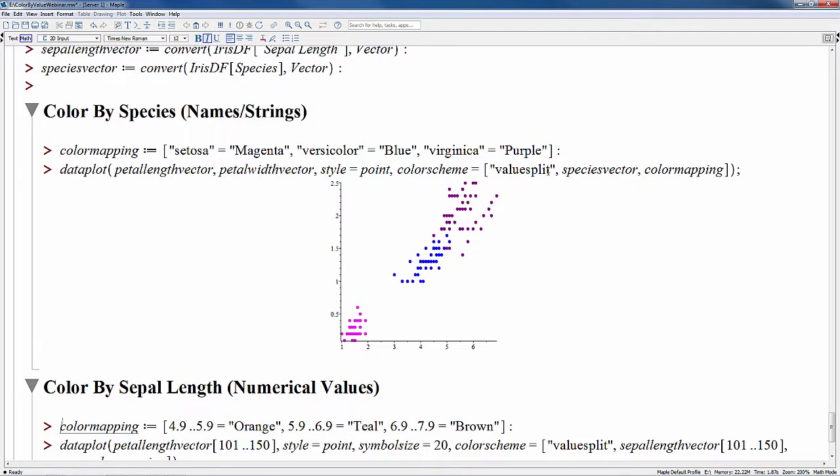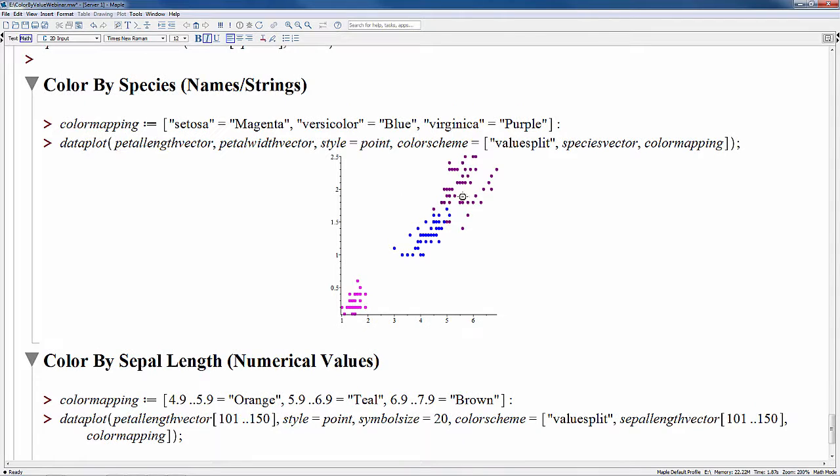And one thing that's important is the length of the vector that we are coloring by must be the same length as the data set here. So if we look at our plot, it's easy to see that the setosa samples, which are in magenta, have short petals and sepals, while the virginica irises, which are denoted by the purple, have the longest length.